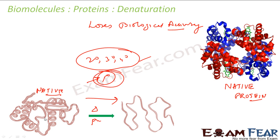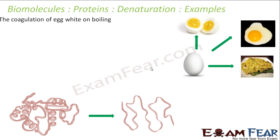To recap: when native protein undergoes change in temperature, pH, or similar conditions, the hydrogen bonds break, the globules unfold, and the helix gets uncoiled. The protein loses its biological activity — this is denaturation of protein. The secondary, tertiary, and quaternary structures are lost, but the primary structure (the sequence of amino acids) remains intact.